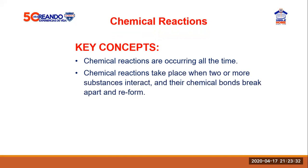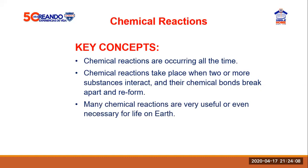Chemical reactions take place when two or more substances interact, meaning one is not enough. Their chemical bonds break apart and reform into something different, releasing energy. We've been talking about bonding — ionic bonding, covalent bonding — and these bonds break apart and then reform into something different.